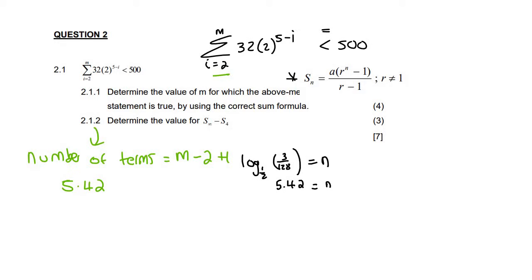Now you might be thinking, but Kevin, you can't have a decimal number of terms. I understand that. But the reason this is happening is because this is actually supposed to say less than 500, but we made it equal to 500. So don't worry too much about that right now. Nothing's wrong, I promise.